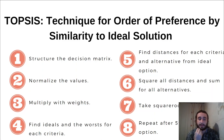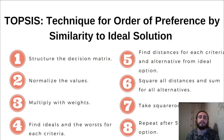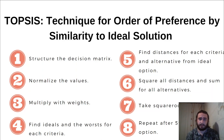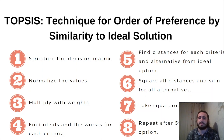After we normalize, we multiply the matrix by our criteria weights. Then we find the ideal and worst values for each criterion — for price we find the lowest value among alternatives, and for quality we find the best option among alternatives.